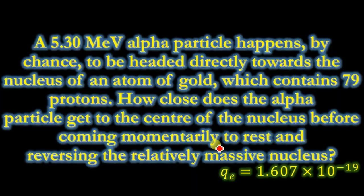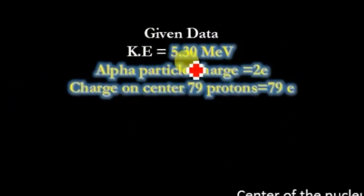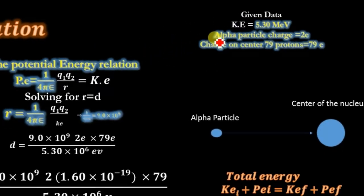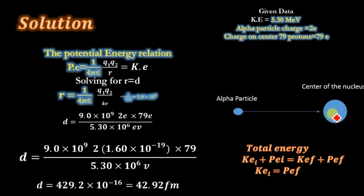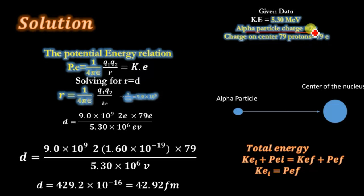We will solve this problem. The given data is kinetic energy equal to 5.30 mega electron volts. The particle approaching toward the center of the nucleus is an alpha particle, and we know that the charge on the alpha particle is equal to 2 electrons. The charge on the center of the nucleus is 79 protons, and since the charge on electron and proton is equal, we can say that is 79 electrons. Both q1 and q2 are positive charges.